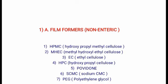The fourth one is HPC, that is Hydroxypropyl Cellulose. It is manufactured by the treatment of cellulose with NaOH, followed by reaction with polyethylene oxide at elevated temperature and pressure. It forms tacky films, so it is used in combinations with other polymers to improve the film characteristics. It is soluble in water below 40 degrees Celsius and insoluble in water above 45 degrees Celsius.